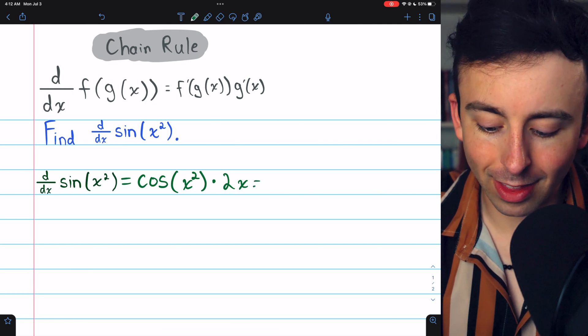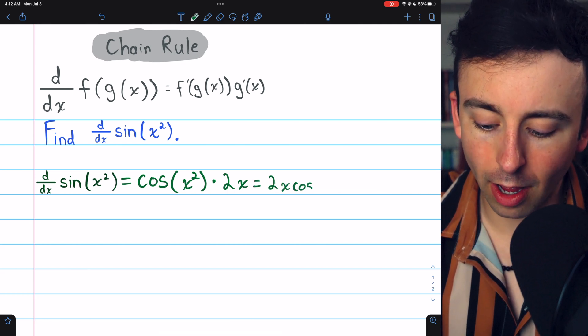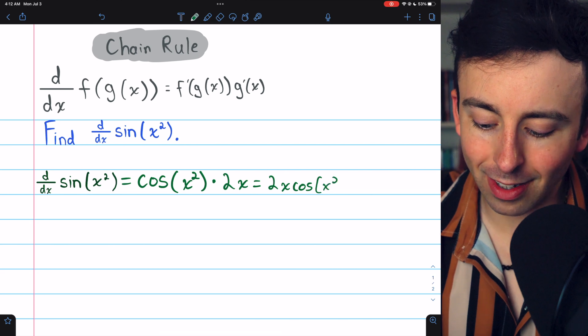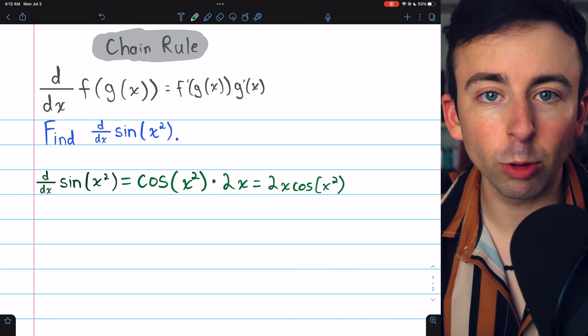We may prefer to write this as 2x times cosine of x squared. That's the derivative of sine of x squared.